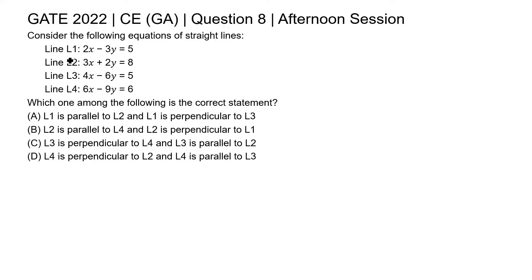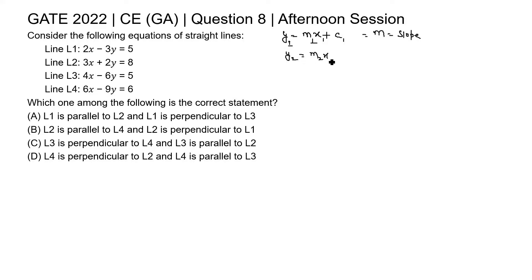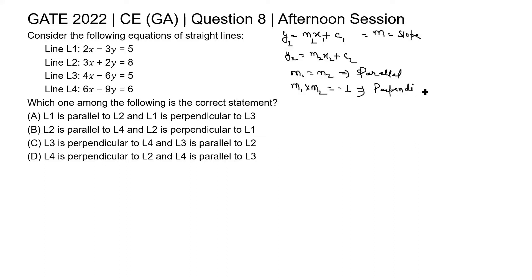In this question, equations of four straight lines are given and we need to comment on whether the lines are parallel or perpendicular to each other. The equation of a straight line is y = mx + c. If the slopes m1 and m2 of two lines are the same, then the lines are parallel to each other. If the product of the slopes equals −1, then the lines are perpendicular to each other.